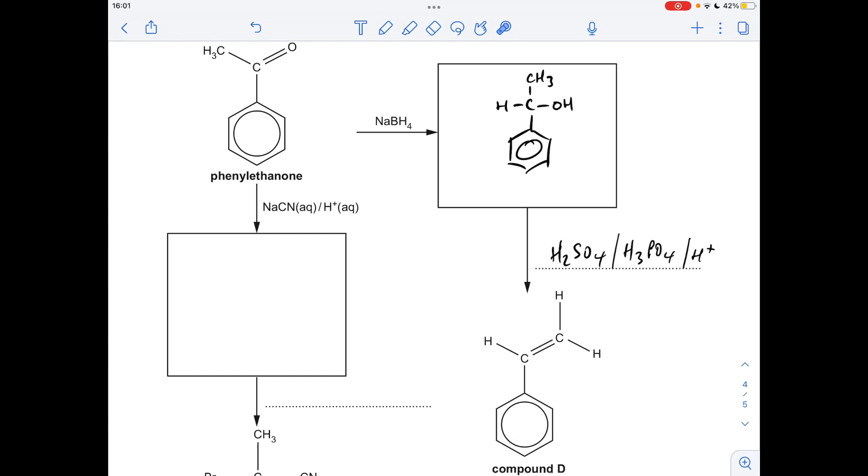And finishing off with this flow chart, so I'll go this way first, and then I'll go down there and across the bottom. So phenylethanone is a ketone, this is a reducing agent, so we're going to reduce the ketone group to a secondary alcohol. So we get that there.